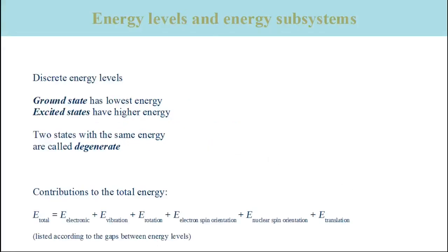An atom or a molecule can adopt only certain energy values, which are the eigenvalues of its Hamilton operator according to quantum mechanics. Therefore, the possible energy values, also called energy levels, are discrete and there are gaps between them.